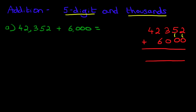Now the first three are all adding zeros, so they remain the same. Two units, five tens and three hundreds. Now we're going to add the thousands. Two plus six is eight. And the last one, four plus zero is four. And that is our answer: 48,352.